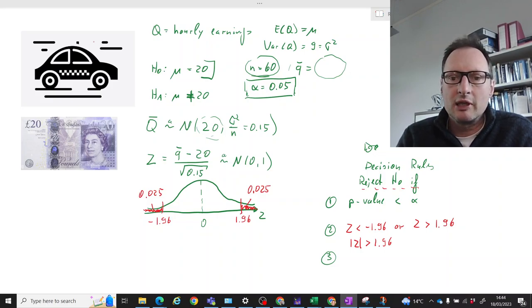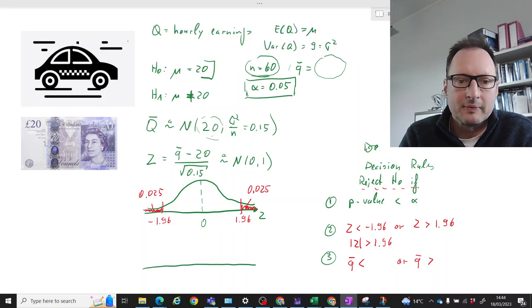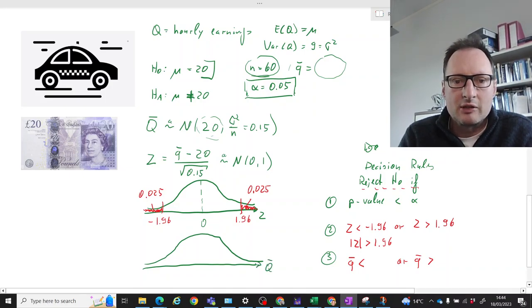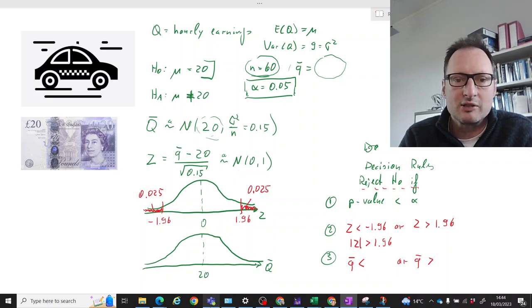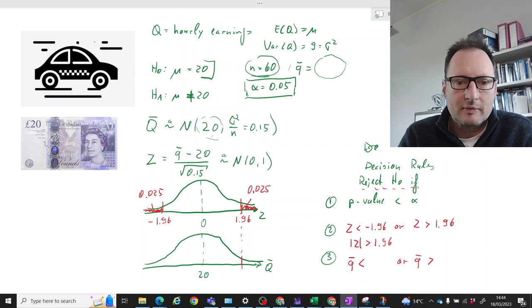But we can also formulate the decision rule in terms of Q-bar, our sample mean. We can write: reject H0 if Q-bar is something. And again we can anticipate it's going to be if Q-bar is smaller than a certain value or Q-bar is larger than a certain value. And we need to figure out what value that is. Let me first work on this graphically. We have our distribution of Q-bar. It's also normal, centered around our hypothesized mean of 20. So the question is: what are these values in the Q-bar world which cut off 5% of the probability aggregated together, so 2.5% in each tail?